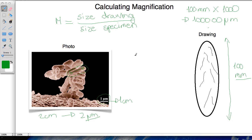So now both of our values have the same units and we can put them into the equation. We've got magnification is equal to 100,000 over 2 and we get the magnification as 50,000. And so it means that the specimen has been magnified 50,000 times in our drawing.